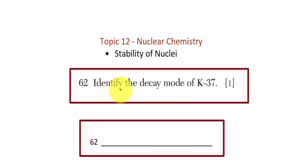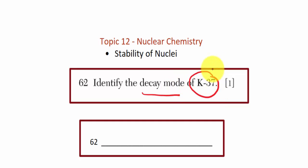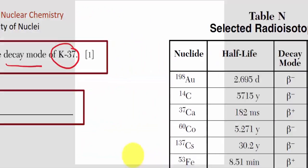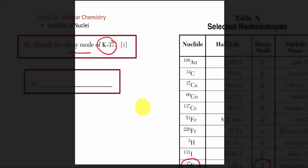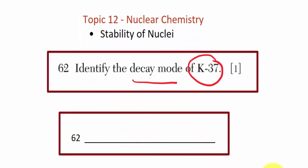Question 62: Identify the decay mode of K-37. Decay modes are listed on table N. From the selected radioisotope table N, K-37 shows a decay mode of B-plus, or positron decay. You can write either the word 'positron' or the symbol beta-plus for full credit.